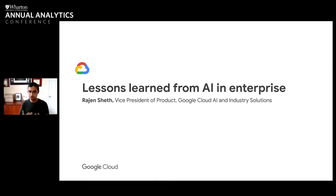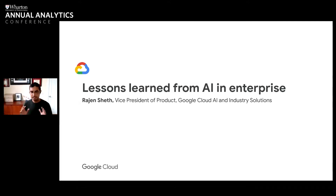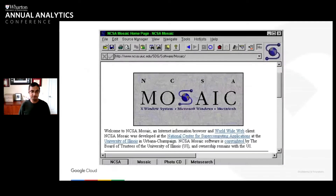Things that, as you think about how to apply AI to businesses, you should be thinking about as well. Many of you may remember this screenshot. For those that don't, this is the Mosaic browser back from 1994. It was really the first time that the average person was able to see how you use the Internet.